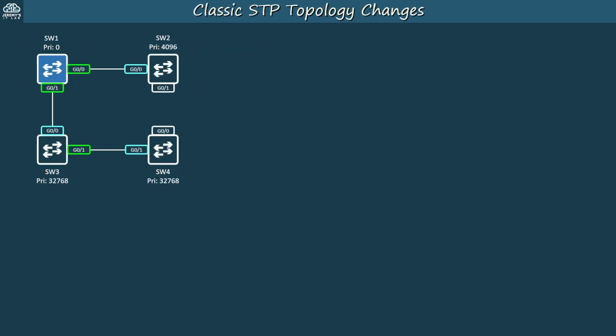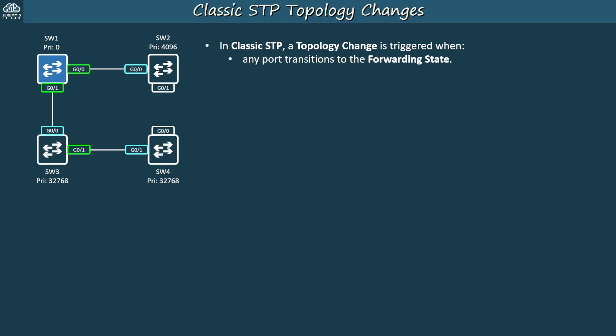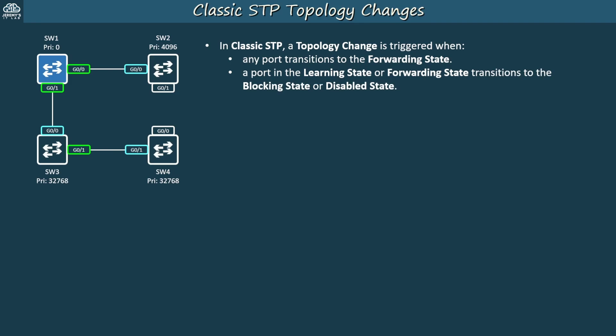Let's get started with our quick review of classic STP topology changes. In classic STP, a topology change is triggered when any port transitions to the forwarding state, or when a port in the learning state or forwarding state transitions to the blocking state or disabled state. This includes ports connected to end hosts, ports connecting switches — any port.